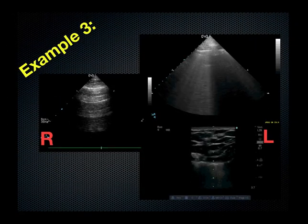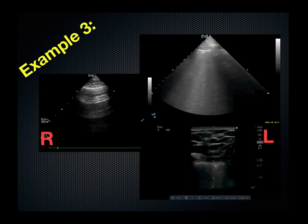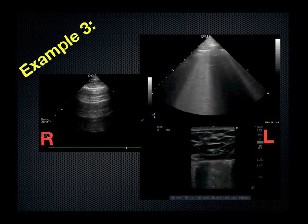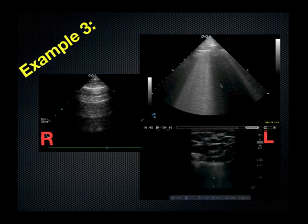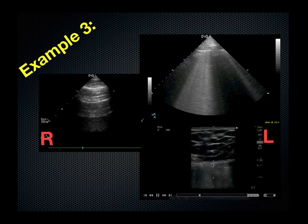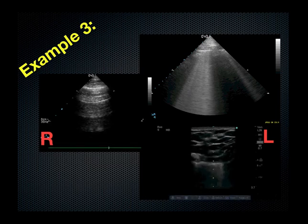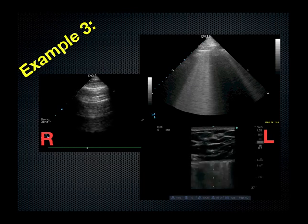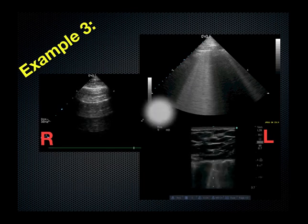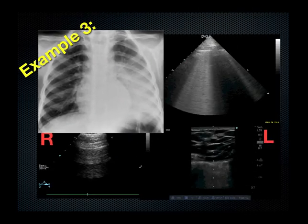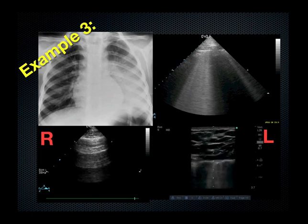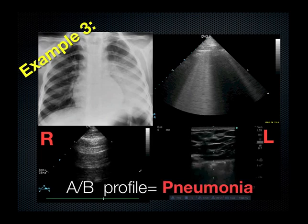Another example: patient arrives in the emergency room short of breath. Your ultrasound on the right has a predominance of A lines, while the ultrasound on the left has a B-line pattern all the way through. Even with a high-frequency probe looking at the pleural line, you can see multiple B lines originating from the pleural line indicating extravascular lung water in the interlobular septae. Chest x-ray might appear such as this — and you would be right to call this pneumonia.